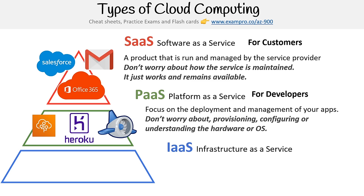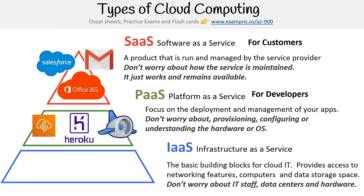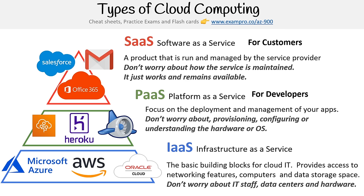At the bottom of the pyramid is Infrastructure as a Service (IaaS) — the basic building blocks of cloud IT, providing access to networking features, compute, and data storage space without worrying about IT staff, data centers, or hardware. This is the true focus of our course. The pyramid shows that IaaS can have PaaS and SaaS built on top of it. Examples of IaaS include Microsoft Azure, AWS, and Oracle Cloud. This is really intended for administrators.